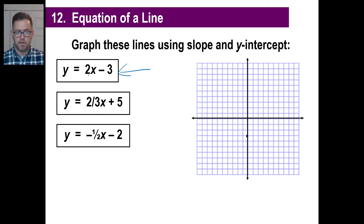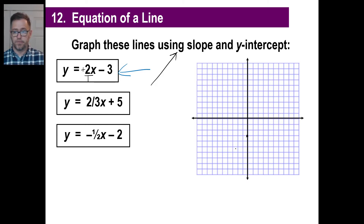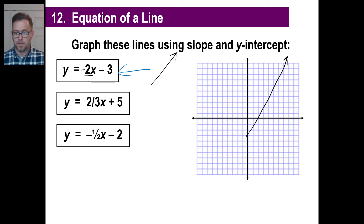The two is a fraction — two over one. That is positive, which means it's going this way. So whatever you do, you can go down two or up two. Let's go up two — one, two — and then over to the right one, to make sure that my line goes like this. And there's my line.